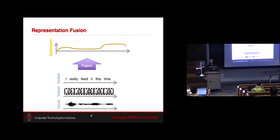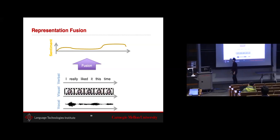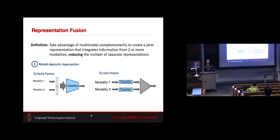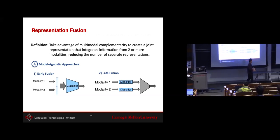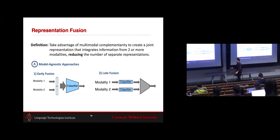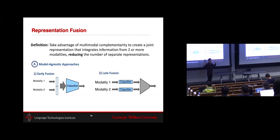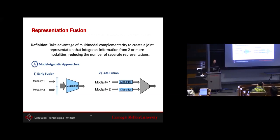Fusion is perhaps the concept most studied in multimodal research for many decades. Early on there were only two model-agnostic approaches: early fusion — concatenating data at the very beginning — and late fusion — processing data separately and combining predictions at the end. If you talked to multimodal researchers back when LP or Russ were PhD students, they'd just ask 'did you try early fusion?' or 'did you try late fusion?' because those were the only two options.